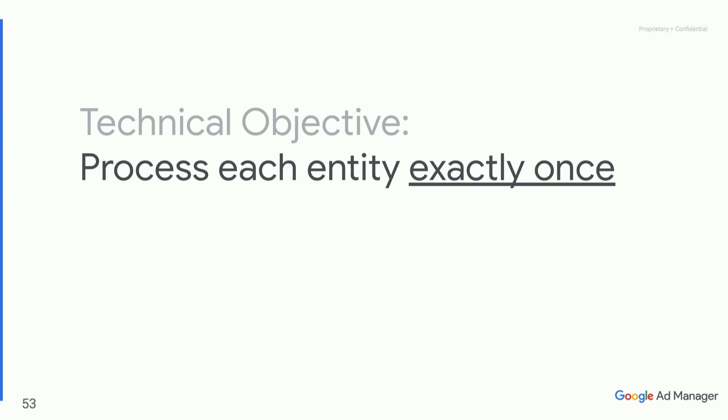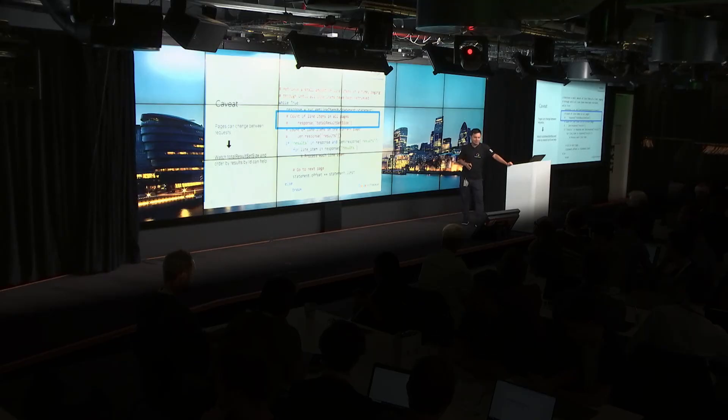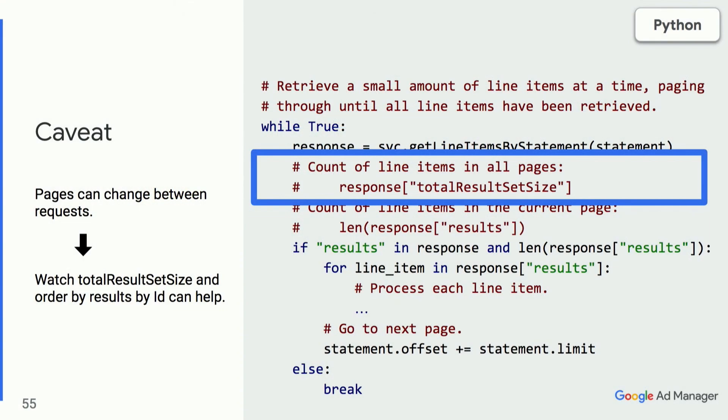The next objective is to accurately process each entity exactly once. This may be an important technical requirement — for example, if you have a unique constraint in your database when you fetch line items and write to the database, you'll want to insert each record exactly once, otherwise you get database constraint violation exceptions.